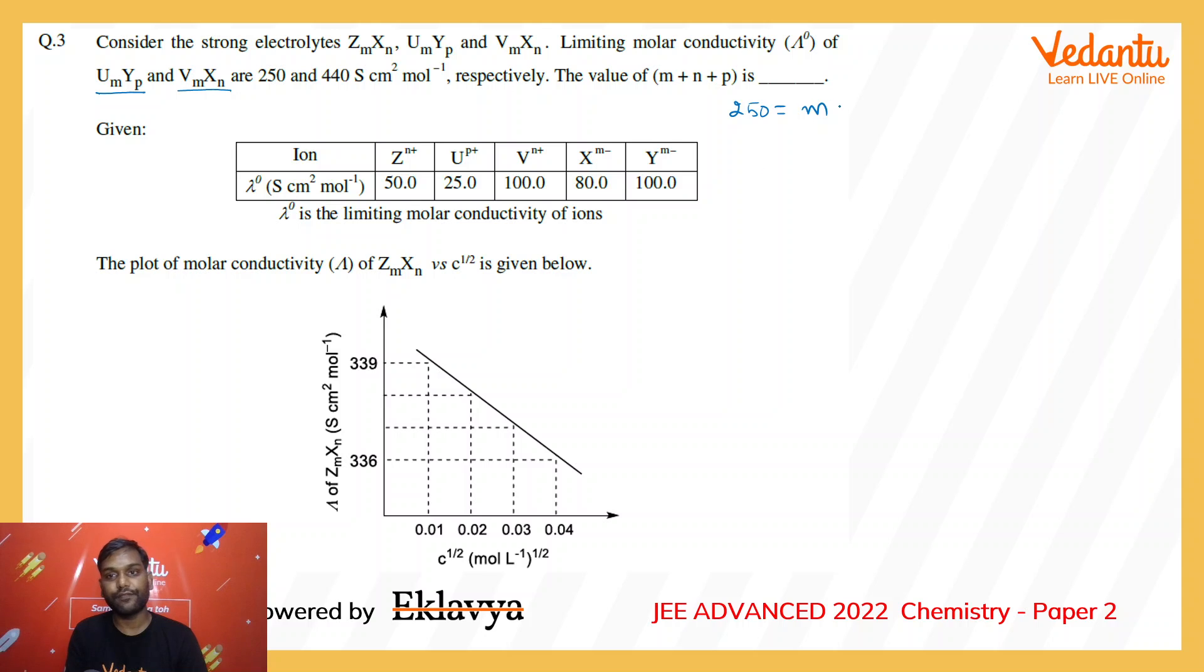...plus P × conductance of Y, which is 100. Similarly, 440 = M × conductance of V, which is 100, plus N × conductance of X, which is 80. That is our second equation.